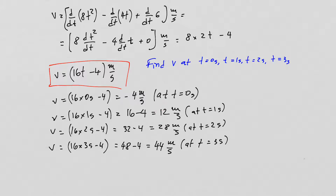If the instantaneous velocity is not a function of time but just a constant number, that means the motion is at constant velocity and the velocity will not change as the object moves.